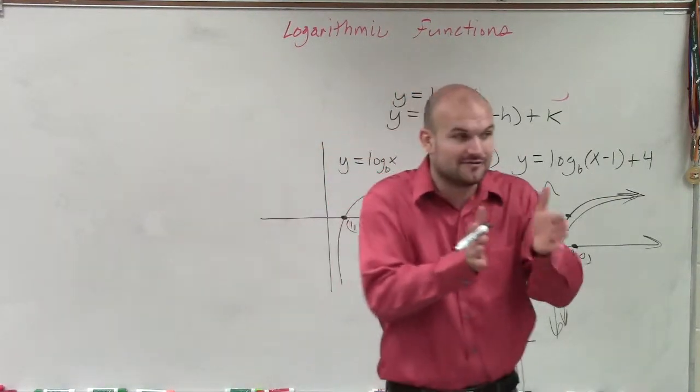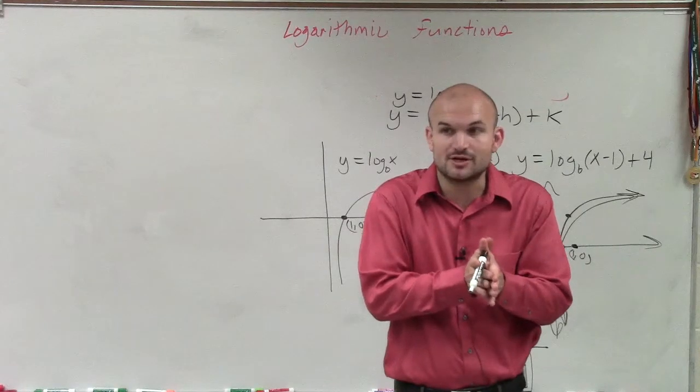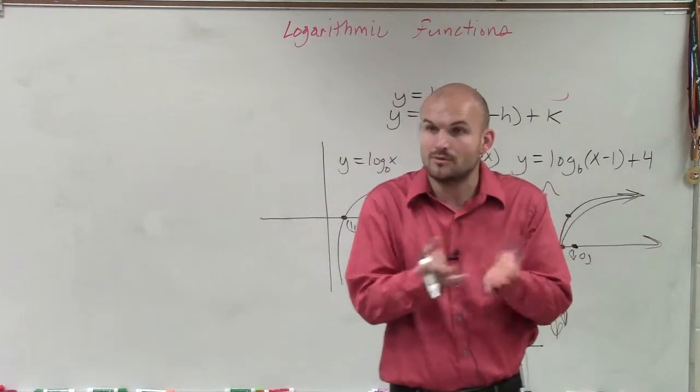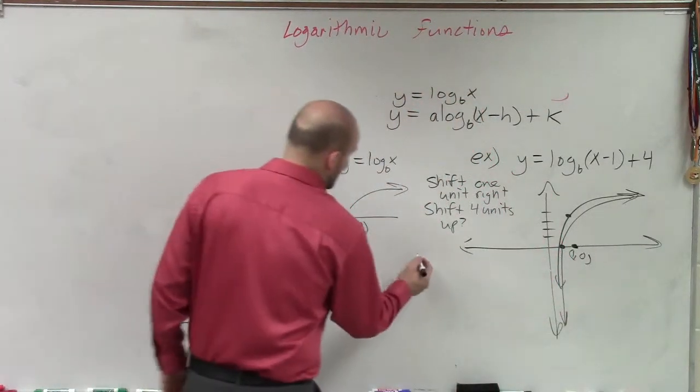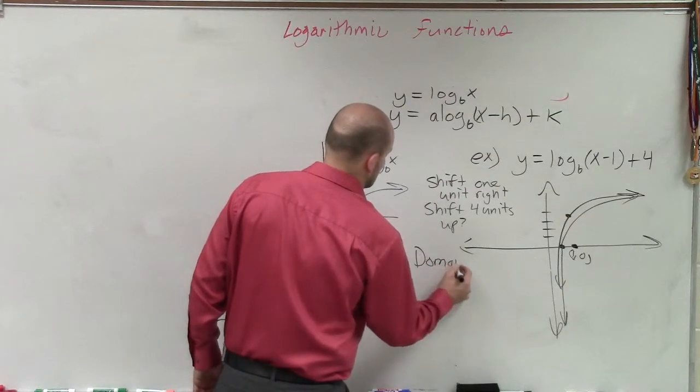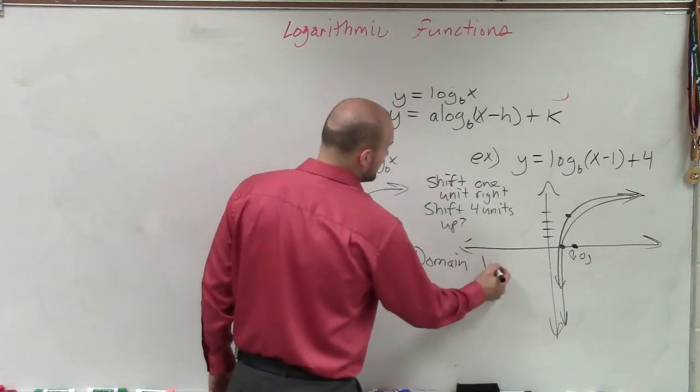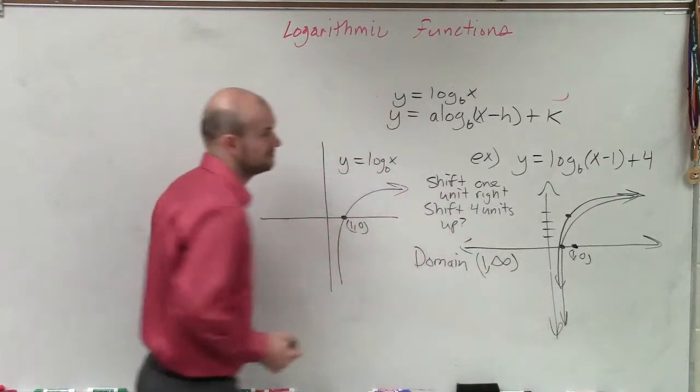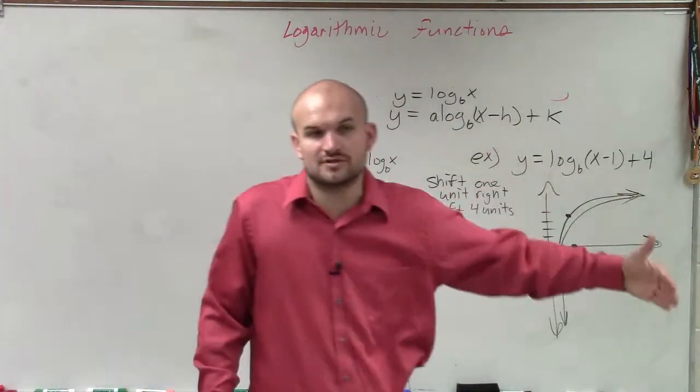Well, if I shift the graph one unit to the right, what's our new asymptote? 1. So you can write your domain is now going to be from 1 to infinity, right? Because we've shifted the graph to the right.